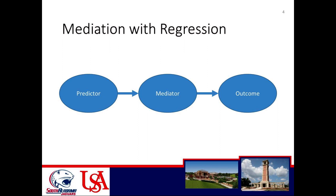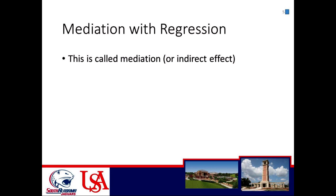This is a simple representation of mediation: it's when you're looking at a predictor influencing a mediator, which then influences the outcome, and that explains why the predictor influences the outcome overall. Mediation can also be called indirect effects — we're not looking at a direct effect, but instead the indirect effect of a predictor on the outcome through the mediator. Whenever you hear the term indirect effect, you should instantly know we're talking about mediation.